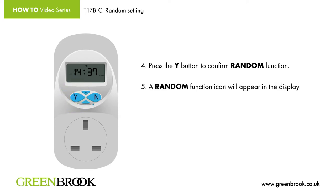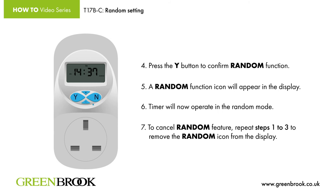Step 5: A random function icon will appear in the display. Step 6: The timer will now operate in random mode. Step 7: To cancel the random feature, repeat steps 1 to 3 to remove the random icon from the display.